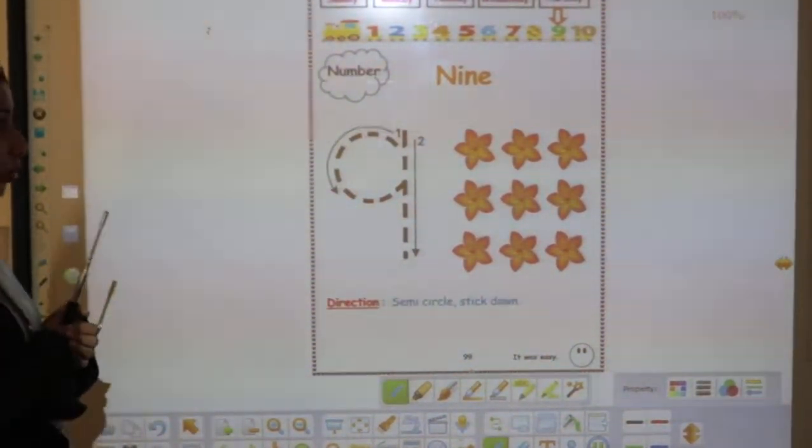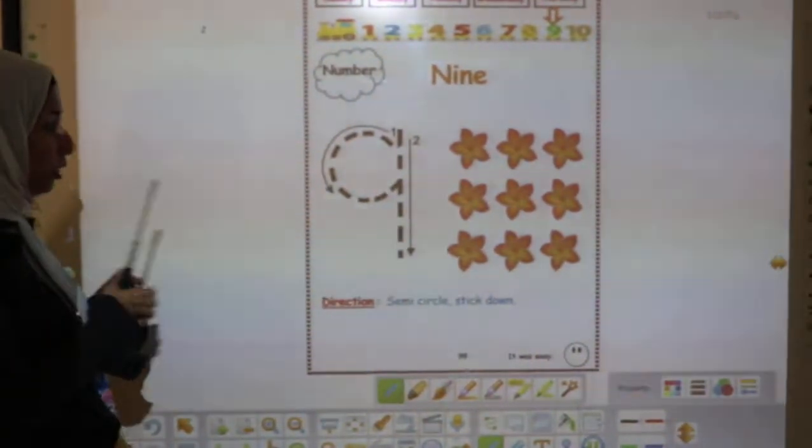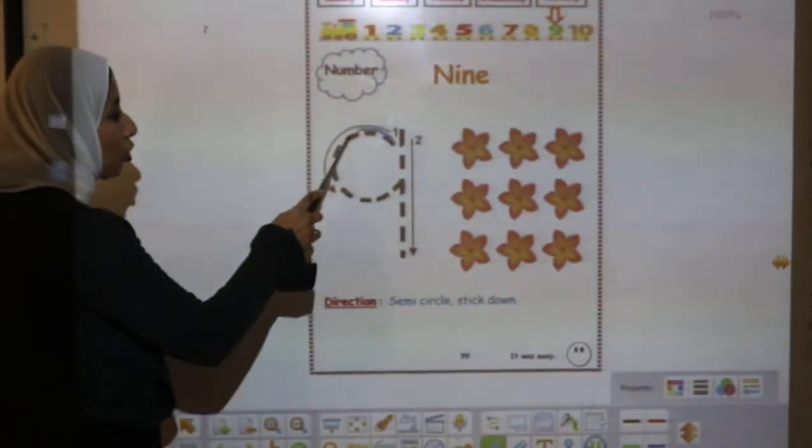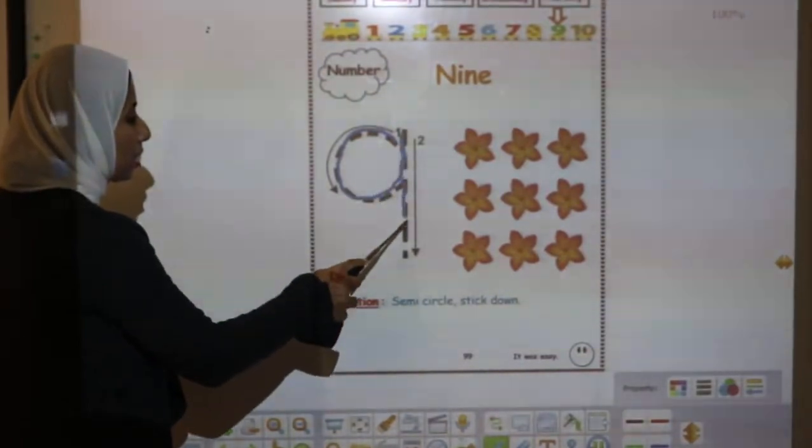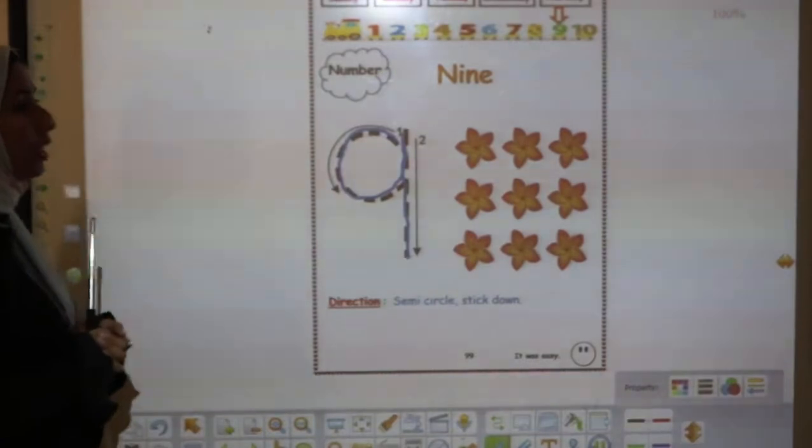How can I write number 9? What is the right direction to write number 9? Semi-circle and stick down. Semi-circle, stick down.